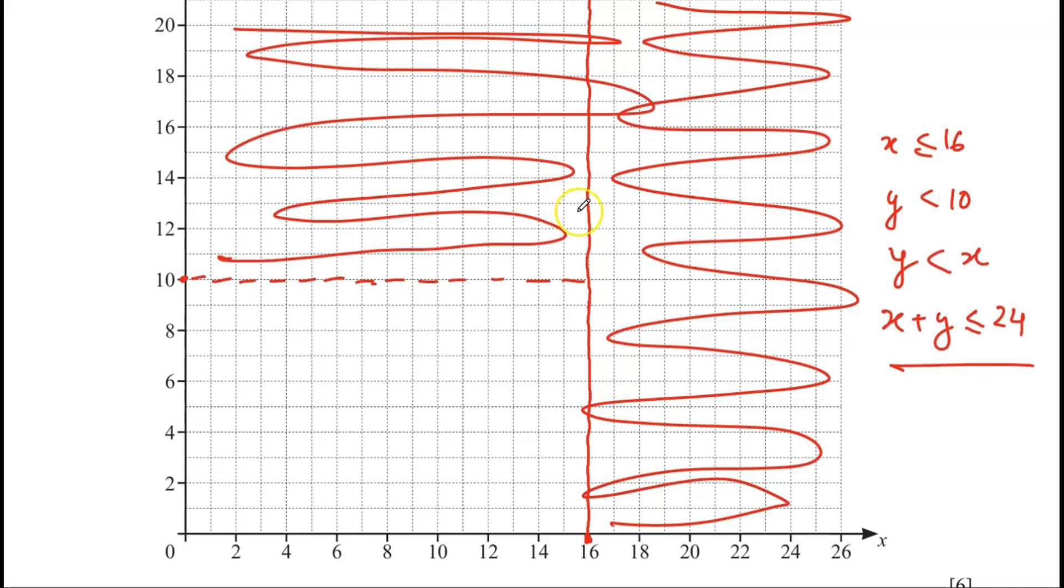And then the next one we have y is less than x. So when y is equal to x, then we have 2, 2, 4, 4, 6, 6, 8, 8, and so on and so forth. So since it is less than, again we are going to draw a dashed line. So that y is less than x. And then here we have the unwanted region.